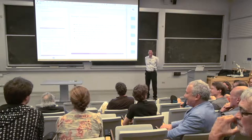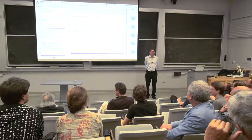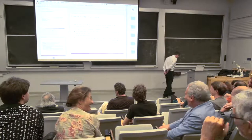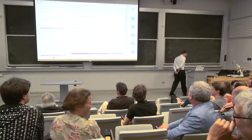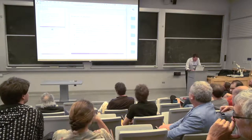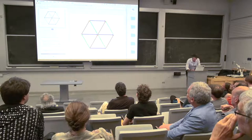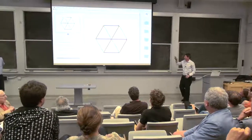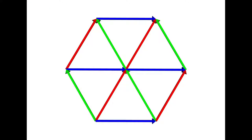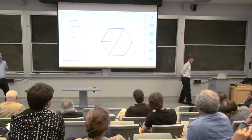An audience member asks about dense packings of formulas, apparently connecting to the sphere packing problem. The speaker responds that his favorite sphere packing in two dimensions is also the one that involves the vectors used for the Kostant partition function — that's about as close as he can come to connecting the two.